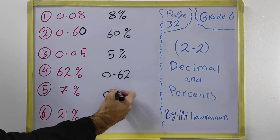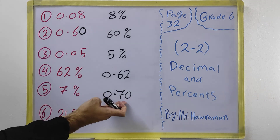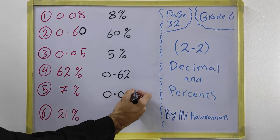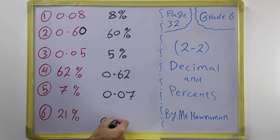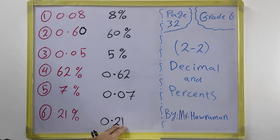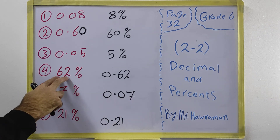For 70 percent: if we write 0.7 that is only one digit after the point, so we make it 0.70 — that is 70 percent. Notice the difference: 7 percent is not 0.70, we must write 0.07. And the last one: 21 percent is written as 0.21 — two digits after the point. So 0.21 means 21 percent, 0.07 means 7 percent, and 0.62 means 62 percent.